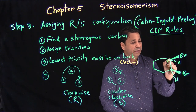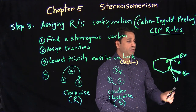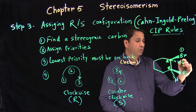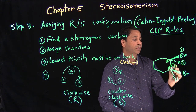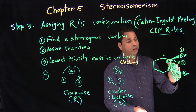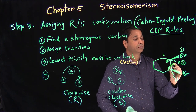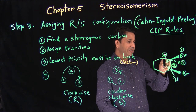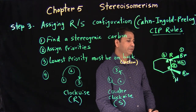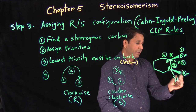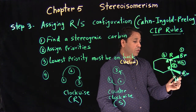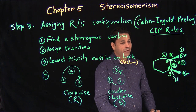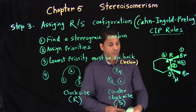We have two stereogenic carbons here. For the first one: that gets number one priority, that gets number four, that gets number two, that gets number three. Going one to two to three clockwise is R. For the second stereogenic carbon: priority one, two, three, and four — going one to two to three, that should be S. So this stereogenic carbon has S configuration.